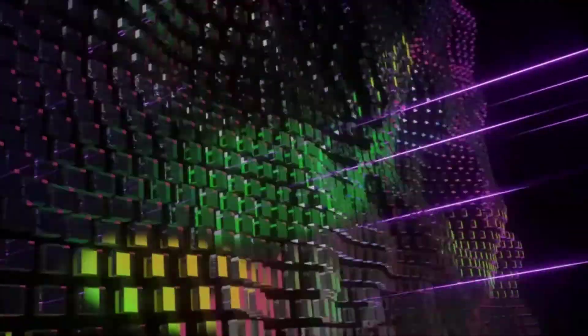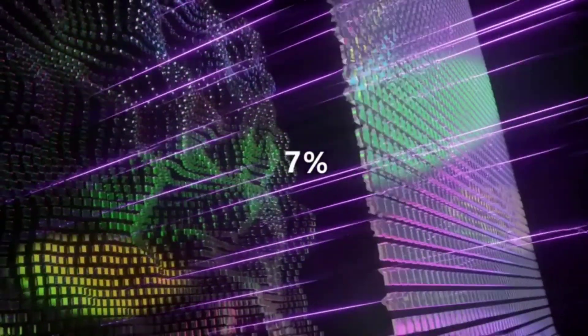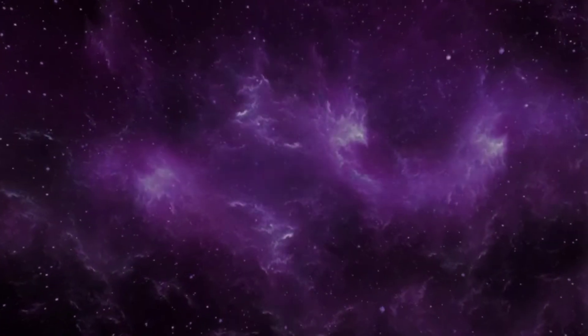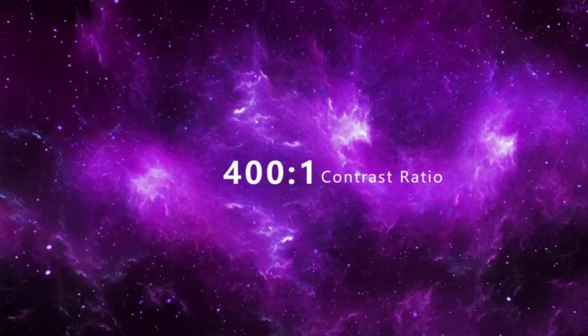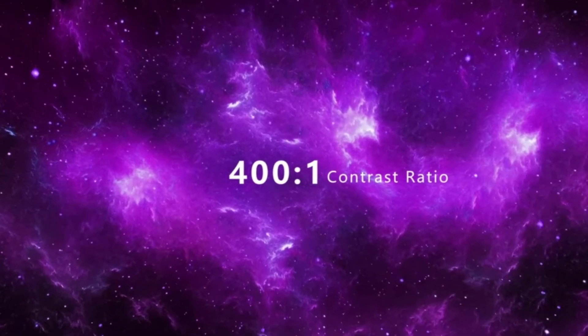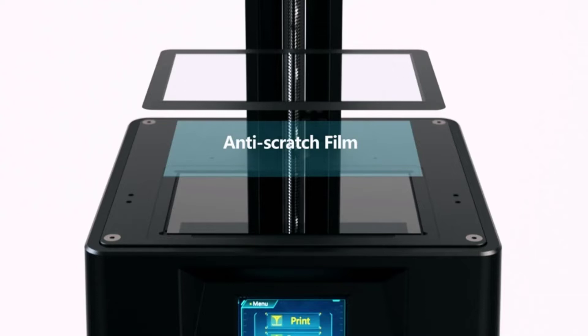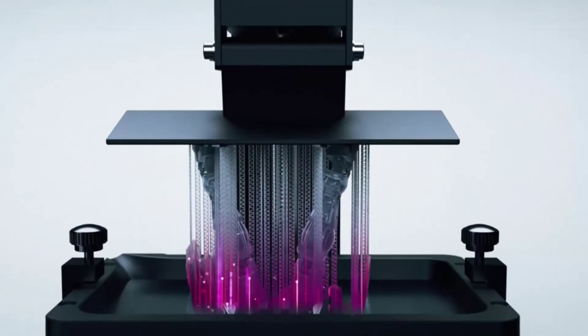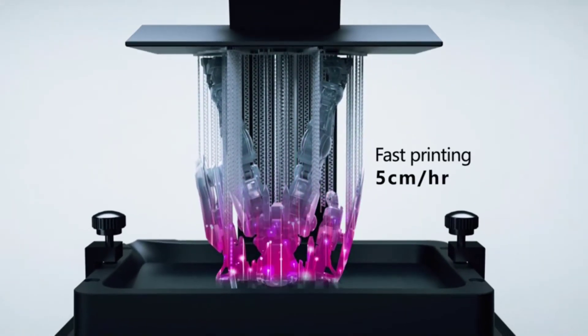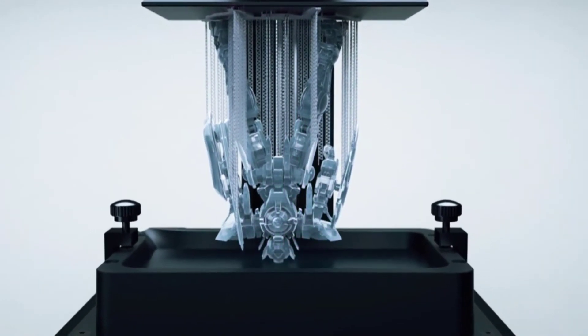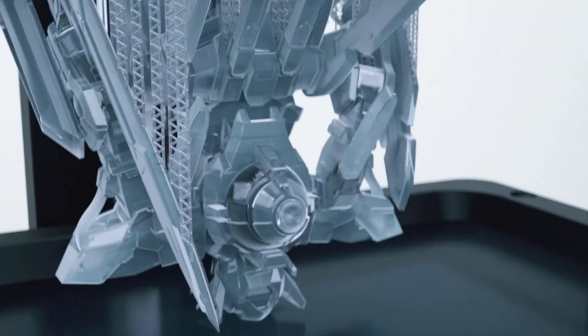Anycubic keeps the price of its Photon Mono down by delivering a no-frills printer. You won't find amenities such as a built-in filtration system or Wi-Fi operation. You might consider the Anycubic Photon Mono SE which features nearly identical specs to the Mono, but with Wi-Fi, a convenient hinged hood, and an onboard filtration system. Still, if you can live without some of the quality-of-life improvements on the Mono SE, the Photon Mono is the best cheap SLA 3D printer you can find.